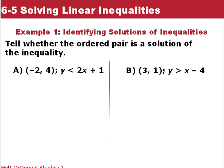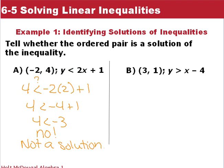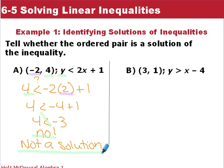In our first example, we tell whether the ordered pair is a solution of the inequality. We substitute negative 2 for x and 4 for y to see if the inequality holds true. Simplifying, we get 4 is less than negative 4 plus 1, or 4 is less than negative 3 — and that is false. Therefore, the ordered pair (negative 2, 4) is not a solution to this inequality.